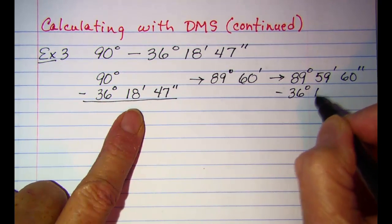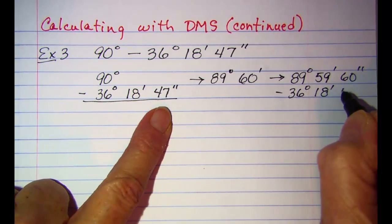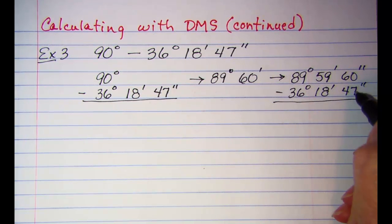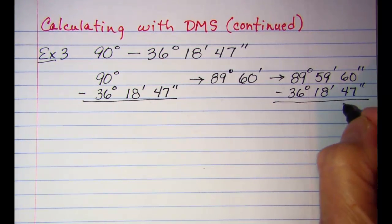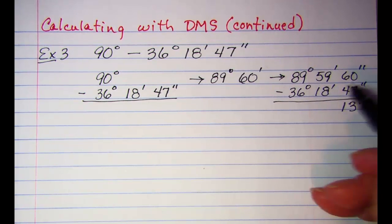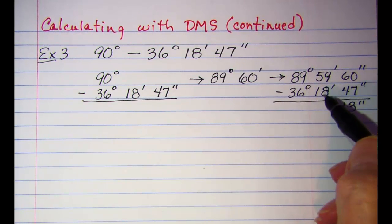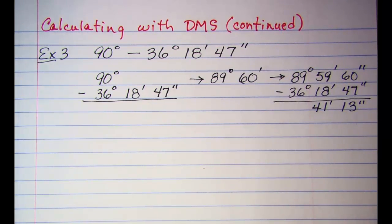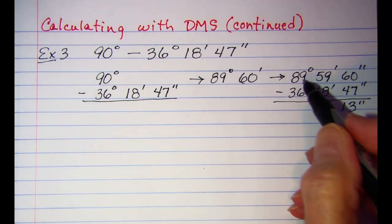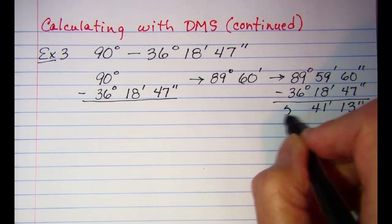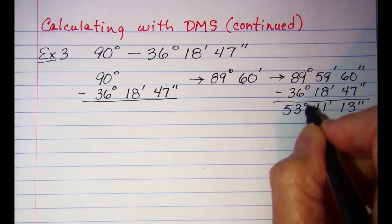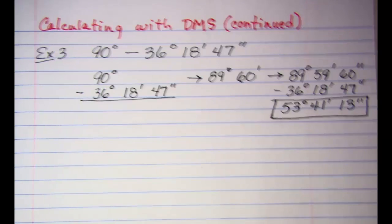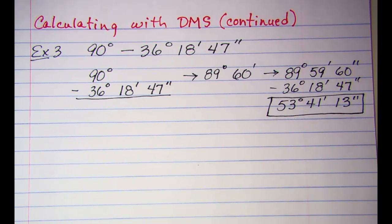Now subtracting: 60 seconds minus 47 seconds is 13 seconds. 59 minutes minus 18 minutes is 41 minutes. And 89 degrees minus 36 degrees is 53 degrees. So the final answer is 53 degrees 41 minutes 13 seconds.